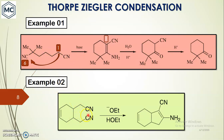Let us take a second example. In this compound two nitriles are present. In the presence of alkoxide base, the alpha carbon reacts with the nitrile. A double bond is formed here, the nitrogen becomes NH2, and the CN group is retained. This shows what changes typically occur in Thorpe-Ziegler condensation.